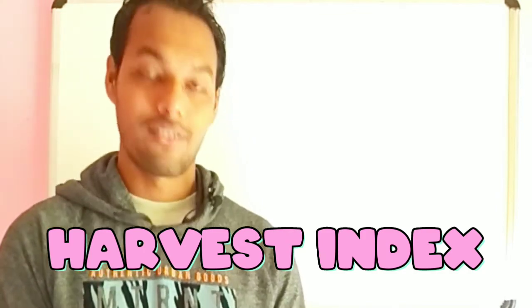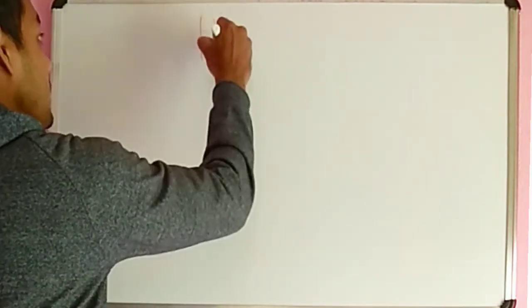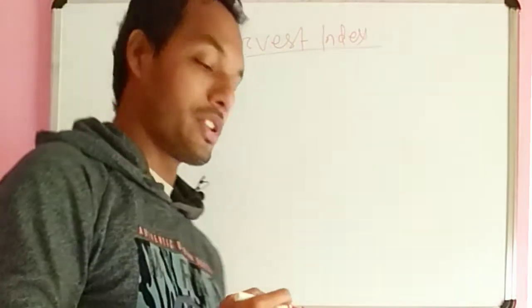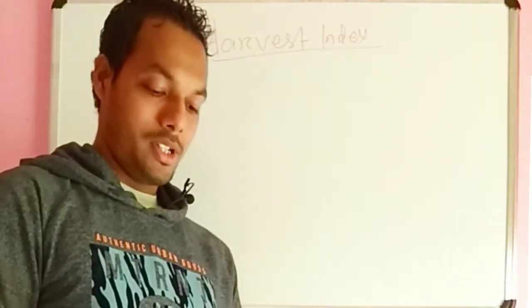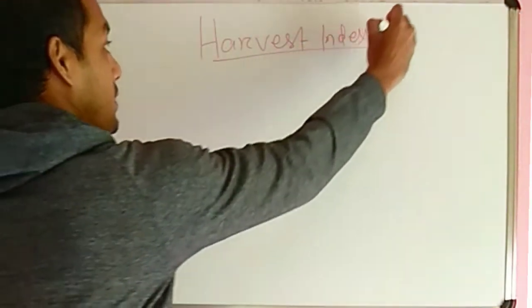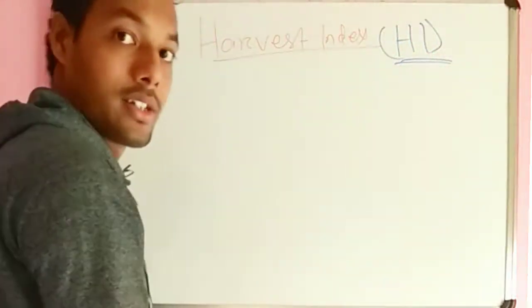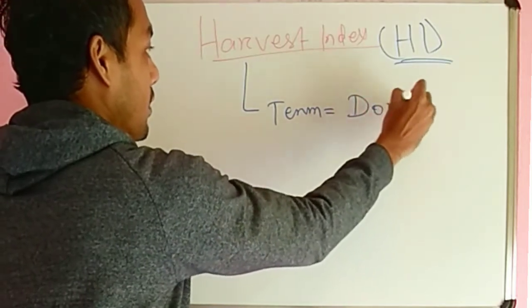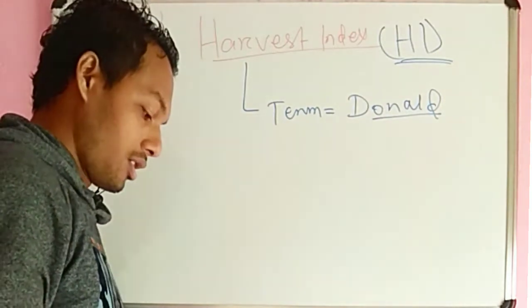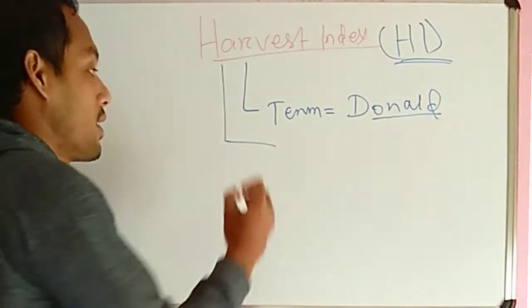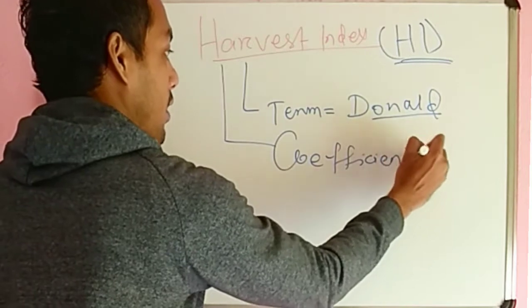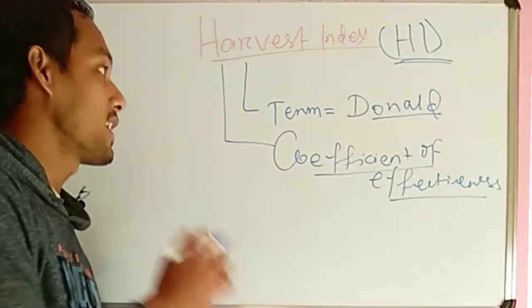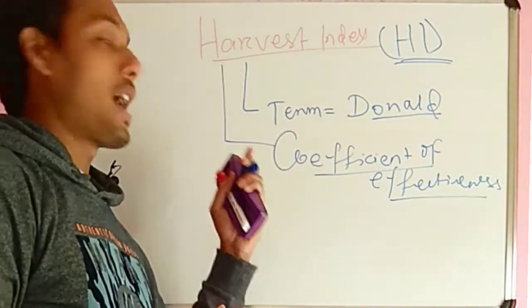Today we will discuss about harvest index. What is harvest index? The term harvest index, written in short form as HI, was given by the scientist Donald. Harvest index is also otherwise known as coefficient of effectiveness.